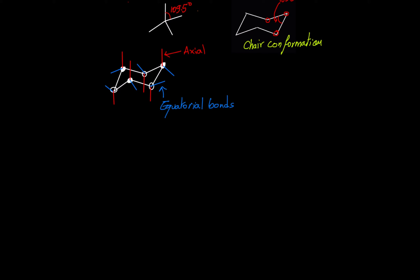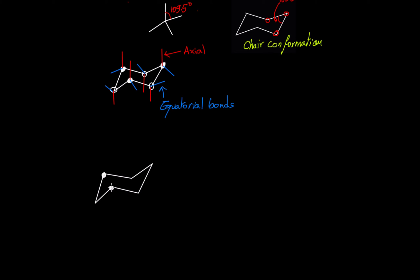In this example, I will draw the flipping of a chair conformation. So just drawing the chair — this is the chair conformation. I will assign the up carbons and down carbons, so this would be down, down, and down.